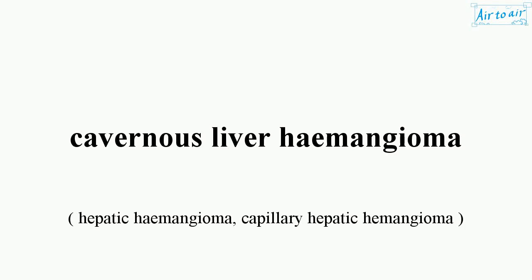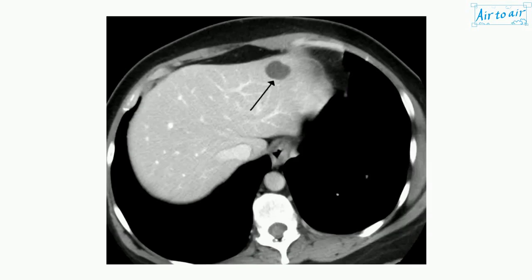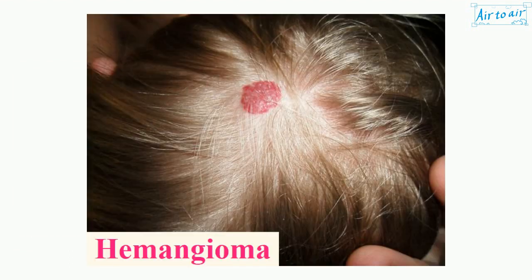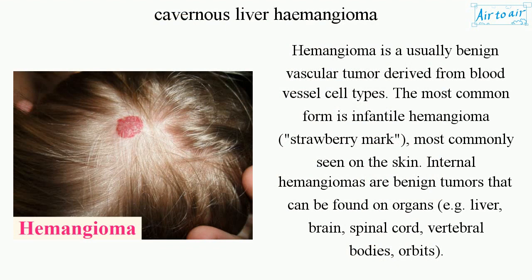Cavernous liver hemangioma is a benign mesenchymal tumor of the liver lined by hepatic endothelial cells with a thin fibrous stroma. It is the most common liver tumor and is usually asymptomatic, diagnosed incidentally on radiological imaging.